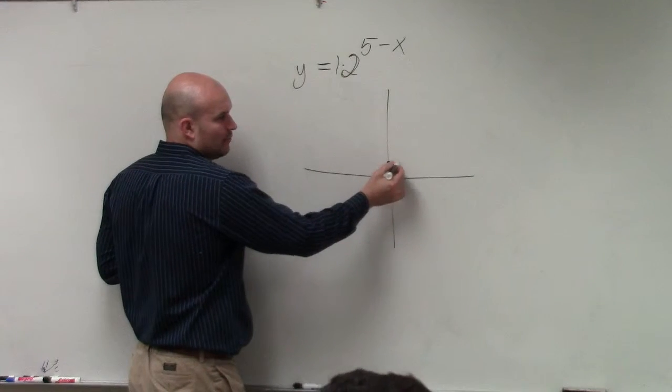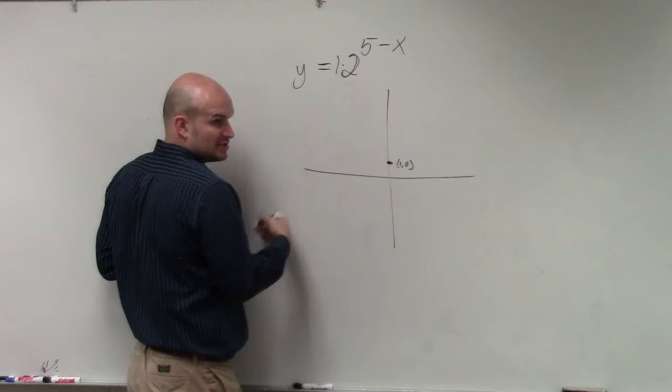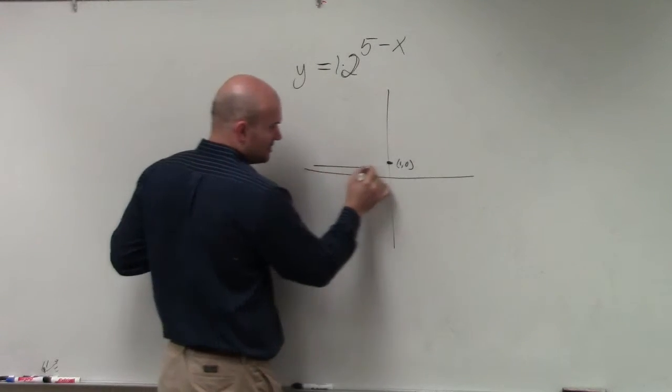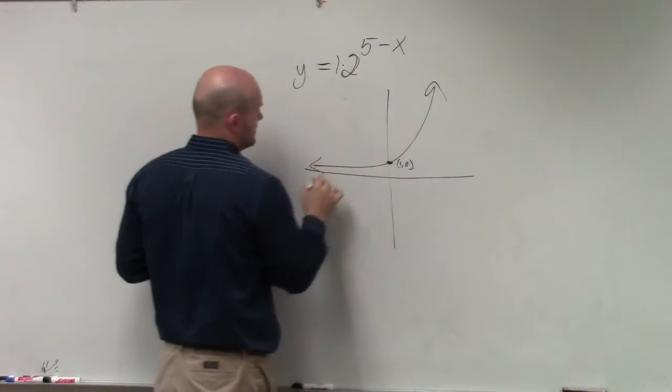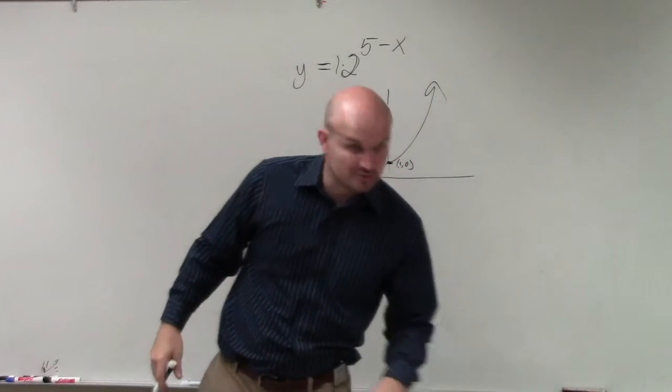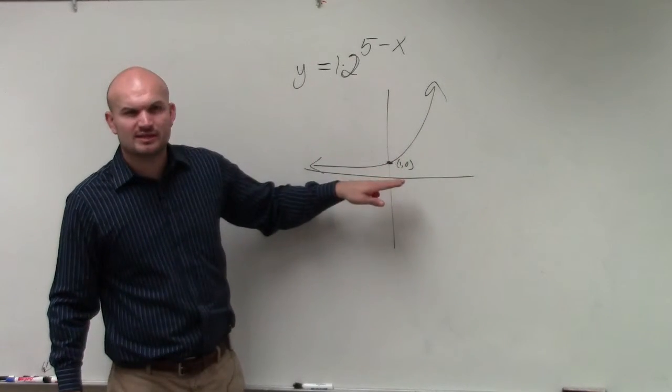So therefore, I know it crosses at 0, 1. So I told you guys to graph kind of two graphs: the initial graph without any transformations, which is provided there, 2 raised to the x, which looks something like this.